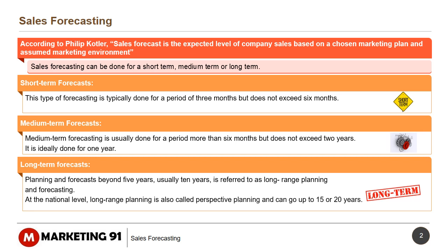Long-term forecasts involve planning and forecasting beyond 5 years, usually 10 years, and is referred to as long-range planning and forecasting. At the national level, long-range planning is also called perspective planning and can go up to 15 or 20 years.